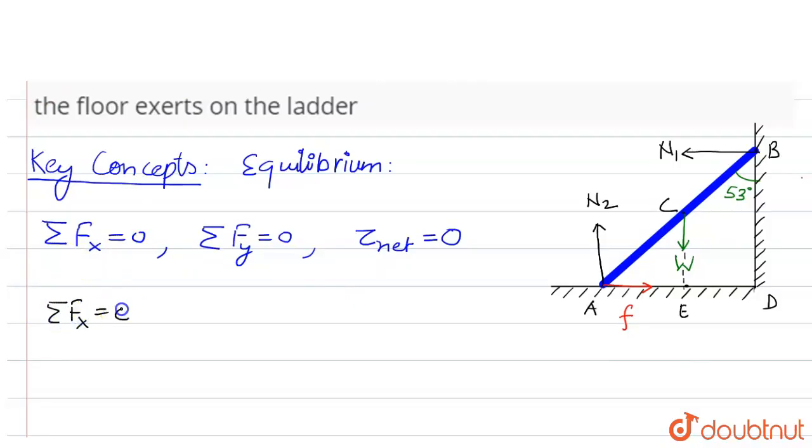We'll use our first key concept which says ΣFx equals zero. So in the horizontal direction we have two forces, that is N1 and f. So from here we'll get N1 equals f. So let's say this is equation number one.